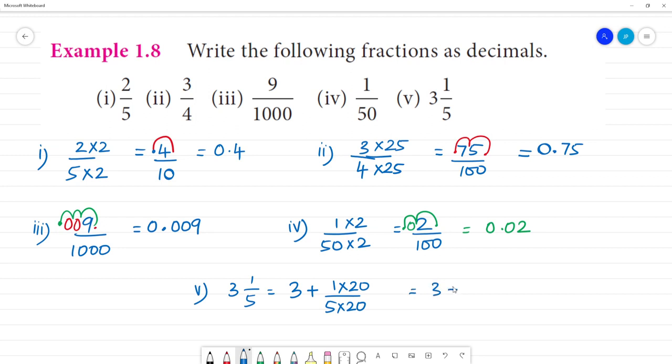So this is equal to 3 plus 20 by 100. 2 digits, that is equal to 3 plus 0.2. So the answer is equal to 3.20. See you again soon.